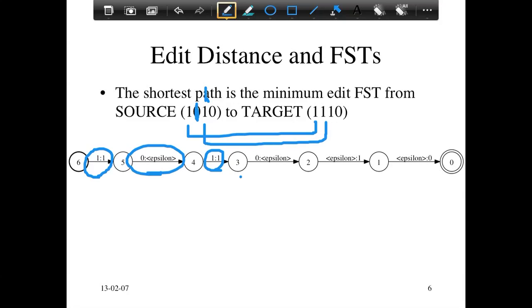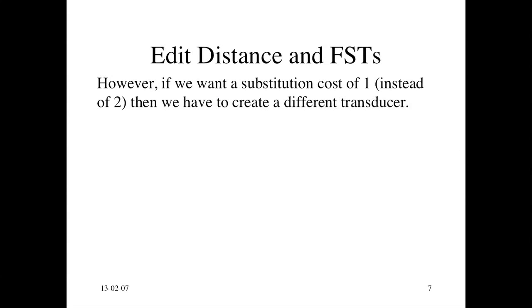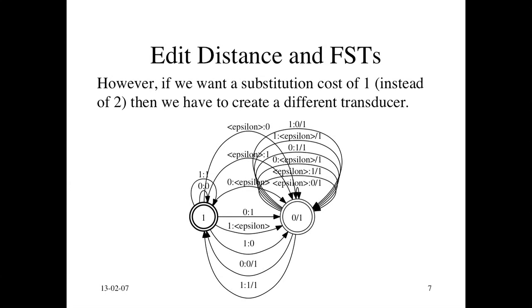And then you remove the 0. There you go. So that's removing the 0. And then you just insert the 1 and the 0. That's these two arcs here. So it tells you not only the minimum edit distance, but also the alignment. So that's a really simple and straightforward way of using finite state transducers to compute edit distance. But if you want a substitution cost of 1 instead of 2, then you have to create a different looking edit FST. And that looks like this when you minimize it.